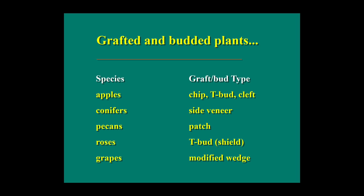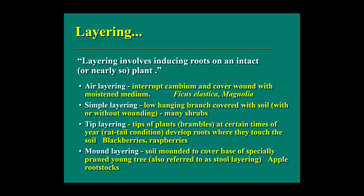Examples of grafted and budded plants: Apple uses chip bud, T-bud, and cleft graft. Conifers are grown by side veneer grafting. Pecans are grown using patch-type grafting and budding. Roses use T-budding. Grapes use a modified wedge graft.